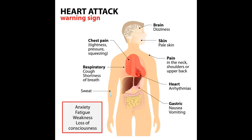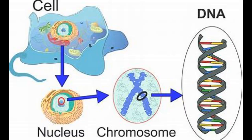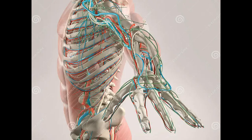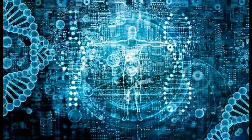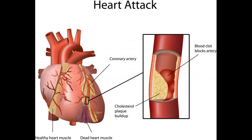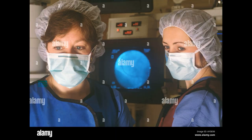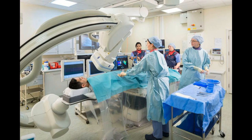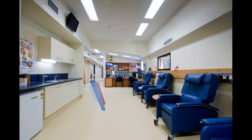Homeostasis is the condition of equilibrium in the body's internal environment. It occurs due to the ceaseless interplay of all the body's regulatory processes. Homeostasis is a dynamic condition; in response to changing conditions, the body's equilibrium point can change over a narrow range compatible with maintaining life. For example, the level of glucose in blood normally stays between 70 and 110 mg per 100 ml of blood.